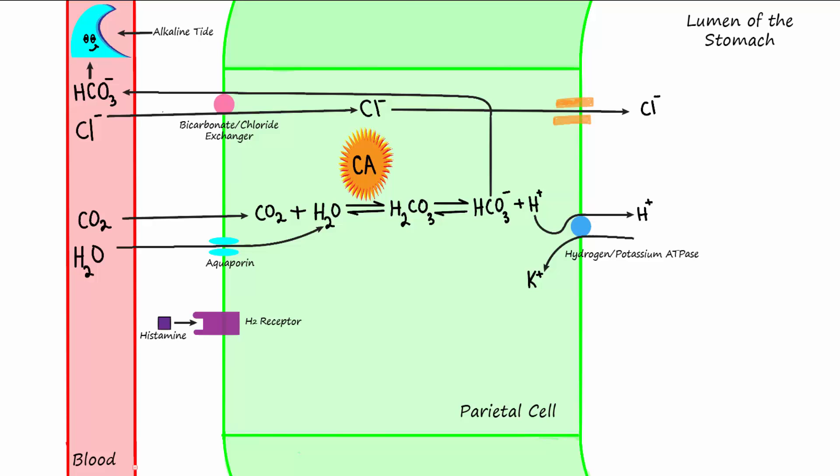The second is the gastrin receptor. Gastrin produced by the neighboring G cells in the gastric mucosa will bind to these receptors and also increase acid production.